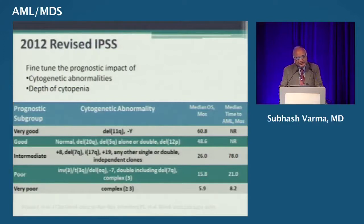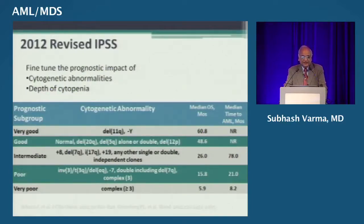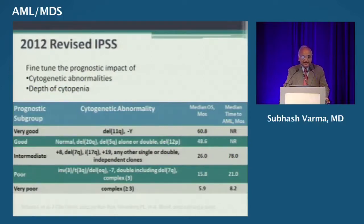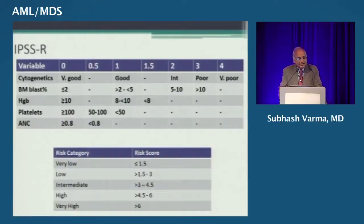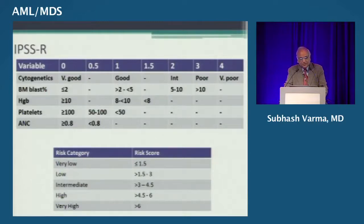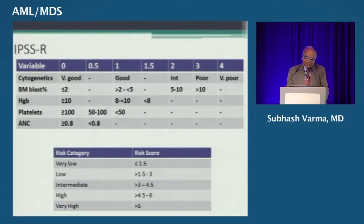The revised IPSS is an international collaborative effort that takes cytogenetic abnormalities and depth of cytopenias into consideration. There is a large list of cytogenetic abnormalities labelled as very good, good, intermediate, poor, or very poor. Variables include cytogenetics, bone marrow blasts, hemoglobin, platelets, and absolute neutrophil count — less than 800 or more than 800. While the last article in Blood suggested this prognostic score works well, it is complex and has not been widely used in clinical practice.